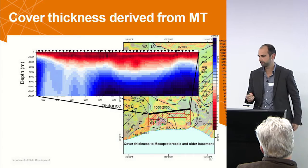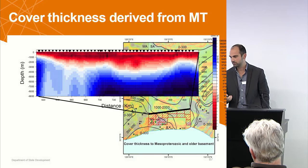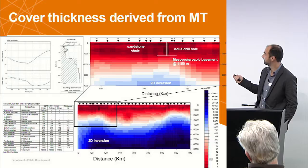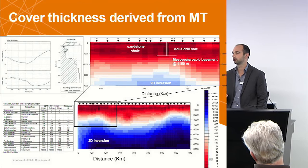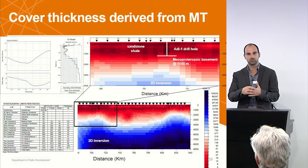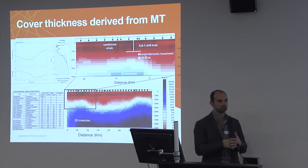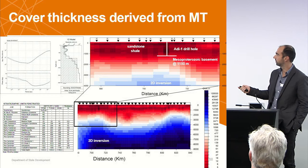Looking at a 2D inversion profile — where we took all the data and inverted it in 2D, stations on top — this profile goes down to about 9 kilometers, zoomed in to show the constraints on depth of cover. Across the entire profile from the border to near the edge of the Gawler Craton, you can see it's quite conductive. Comparing this to drill hole information: the site sits right on top, and basement has been intersected at about 1,150 meters. There's quite a good correlation between the bottom of the most conductive feature and the transition to resistive basement.